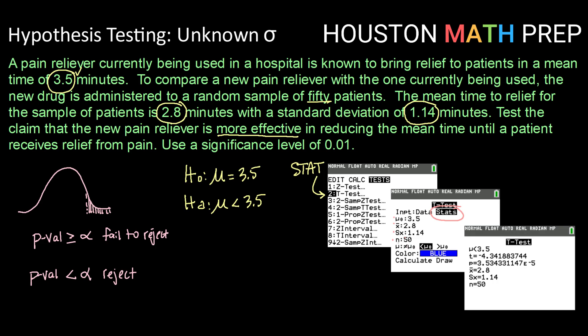Last but not least, we need to enter in what kind of test we are running. For that, we just look at the way that we wrote our alternative hypothesis. So if we have μ is less than 3.5, then I'm going to go ahead and grab the less than one and toggle down to calculate.